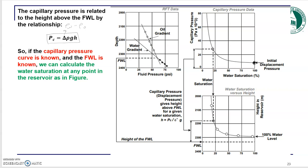That's one set of data, which initially comes from the laboratory and then you convert it to the field scale. The second set of data comes from the wellbore — well logging from your reservoir — called RFT data. Based on that, you get the oil and water gradients and the intersection of their fluid pressures.